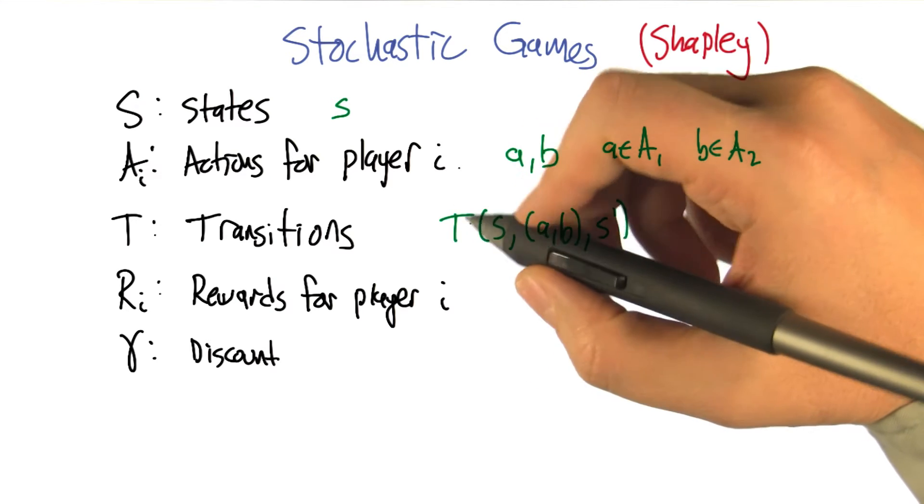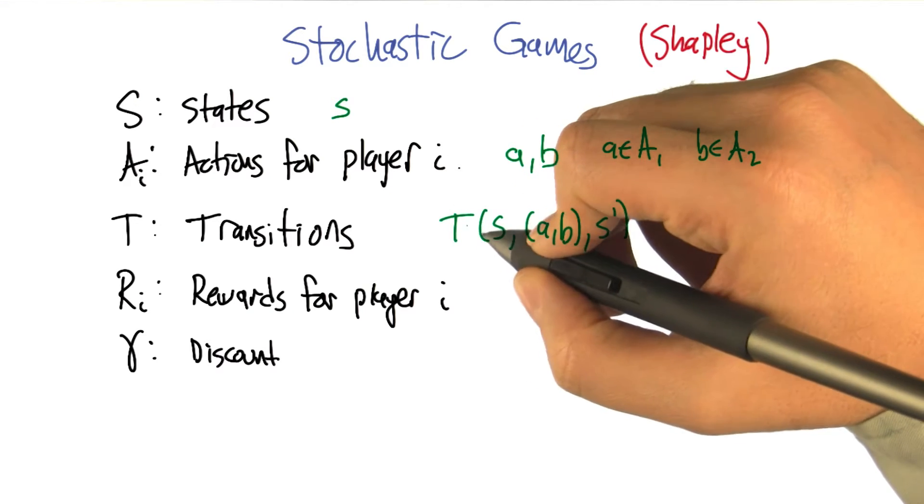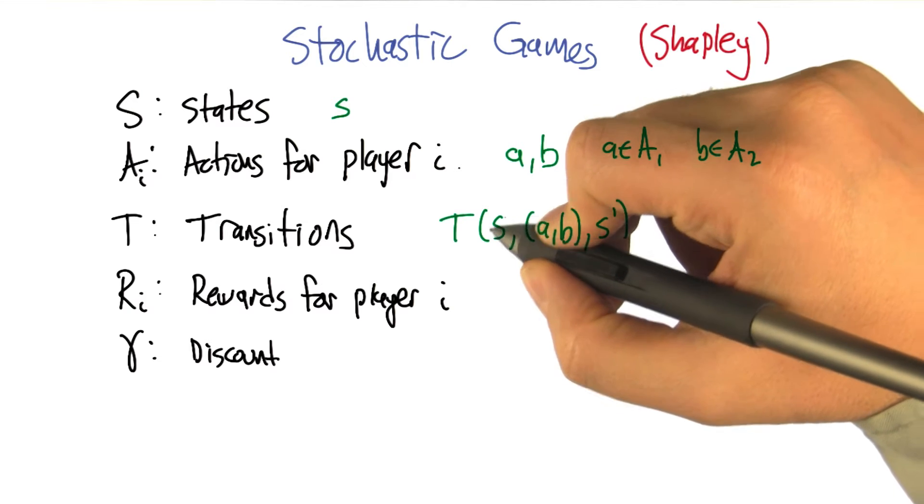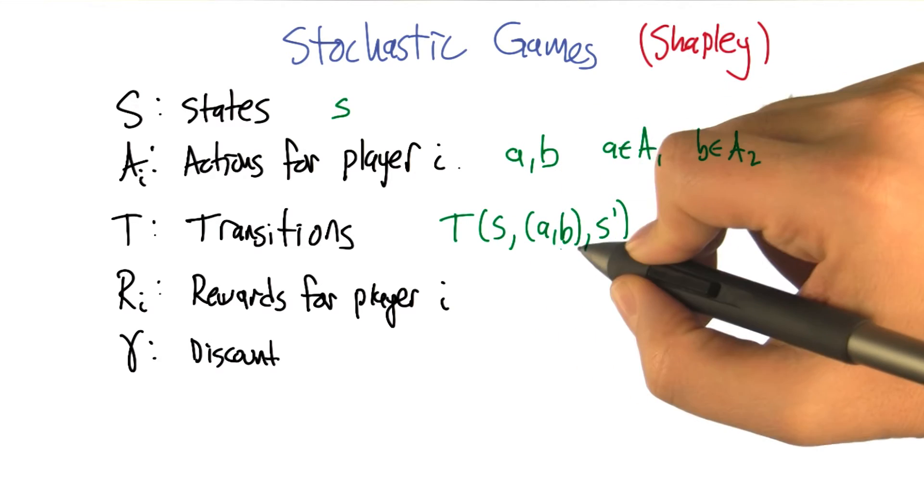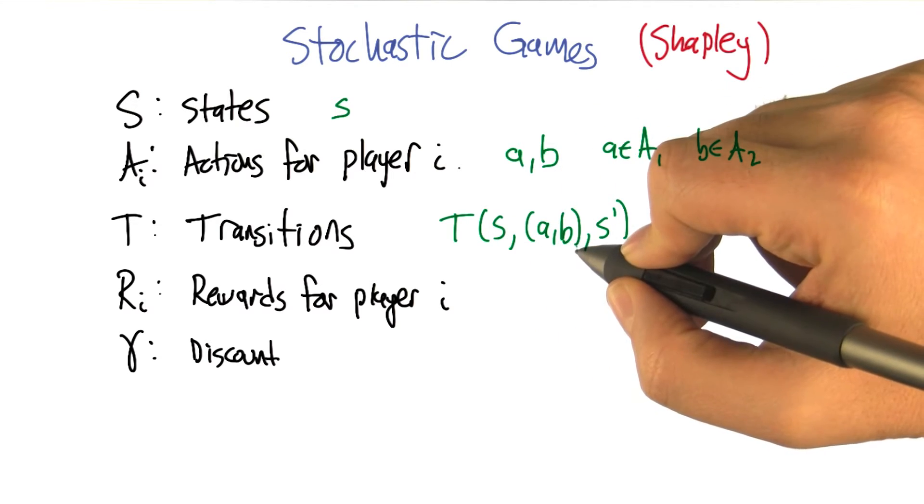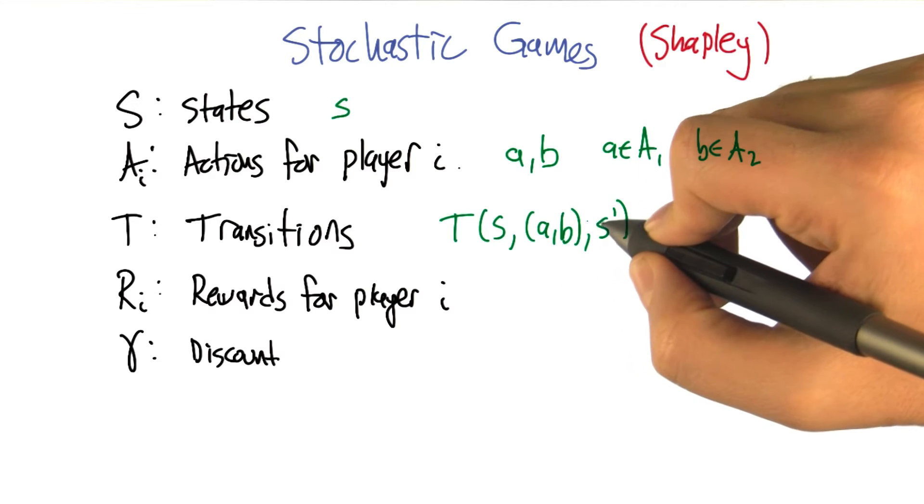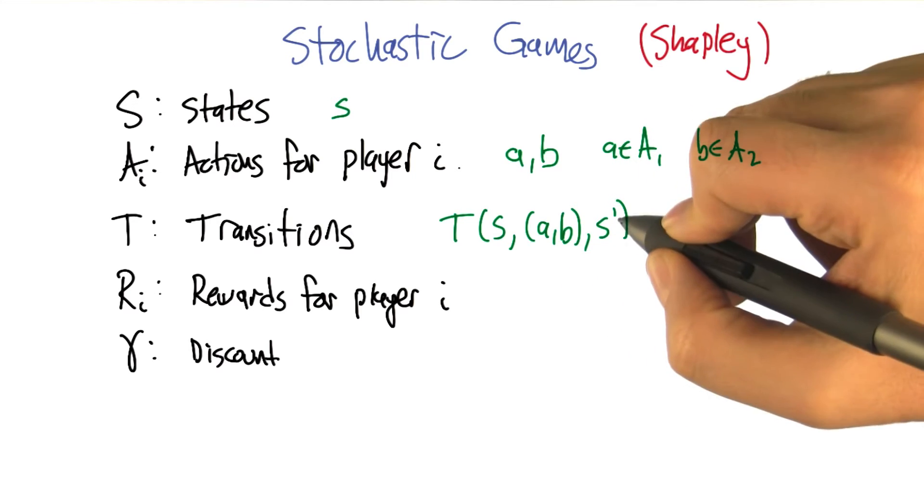All right, so next we have the transition function. The transition function says, if you're in some state s, and there's some joint action that's taken, like all the players choose their actions simultaneously, a, b, then what's the probability of reaching some next state s prime?